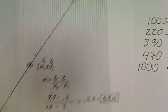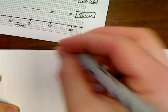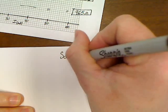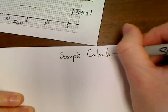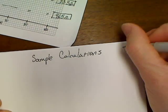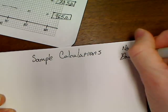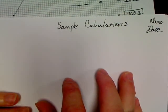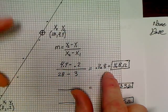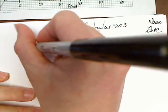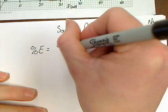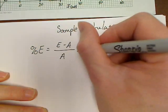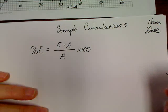Now get out another sheet of paper. At the top of this page, write 'Sample Calculations,' and put your name and date on that sheet. To do the sample calculations — we've already done the slope calculation — the only calculation left to make is a percent error. That would be |E minus A| over A, times 100.